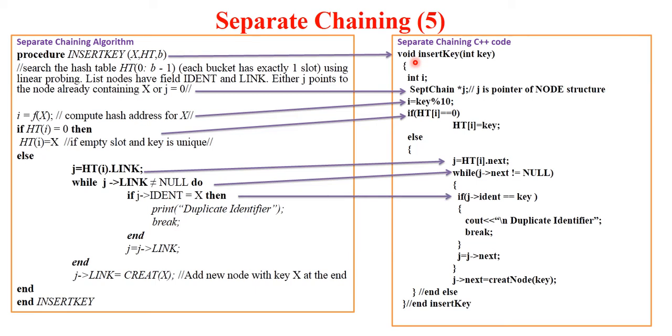While traversing, if we find that our identifier x, that is the key to be inserted x, is matching with the already existing node in the chain, that is the identifier value of that particular node, then we will say duplicate identifier, we need not insert it. Otherwise we will go to the next node.